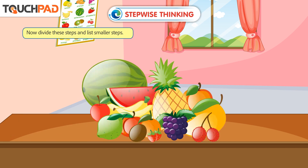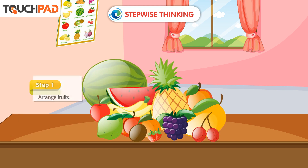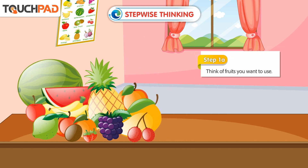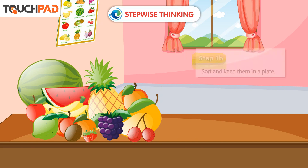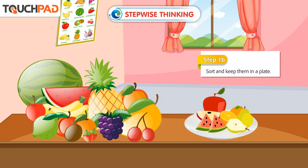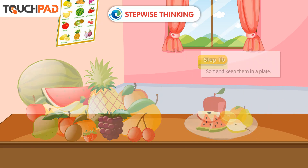Now, divide these steps and list smaller steps. Step 1: Arrange fruits. Step 1a: Think of fruits you want to use. Step 1b: Sort and keep them in a plate.